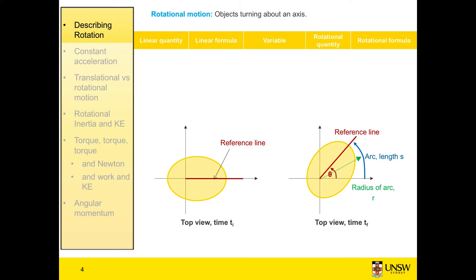Our first linear quantity is position. We use the term X to describe that, and its units are meters. Our angular position, we describe by our angle theta, and its units are always radians. We know from circle geometry that our angle theta can be written in terms of our arc length and radius as S divided by R.